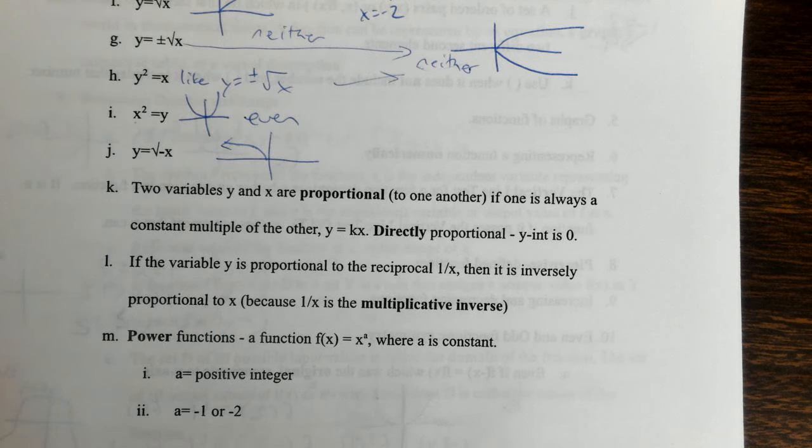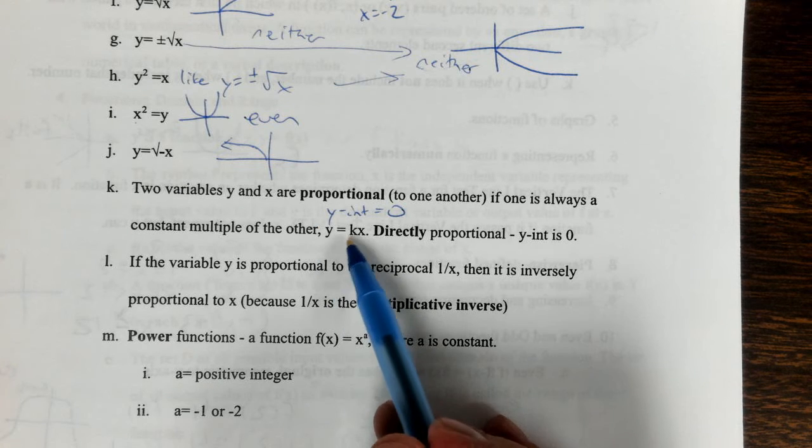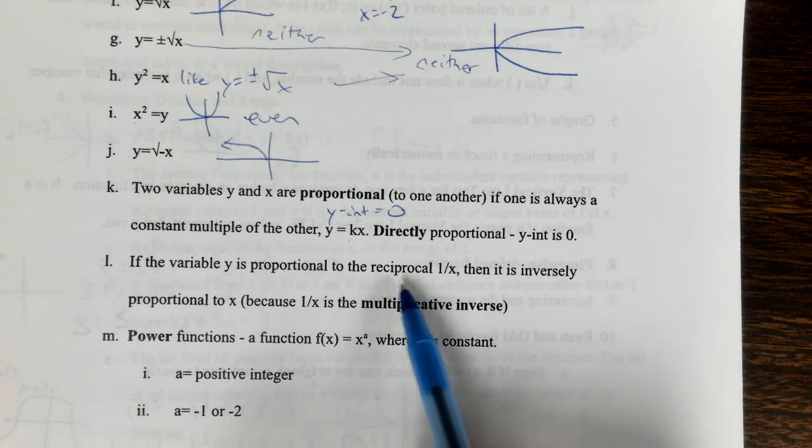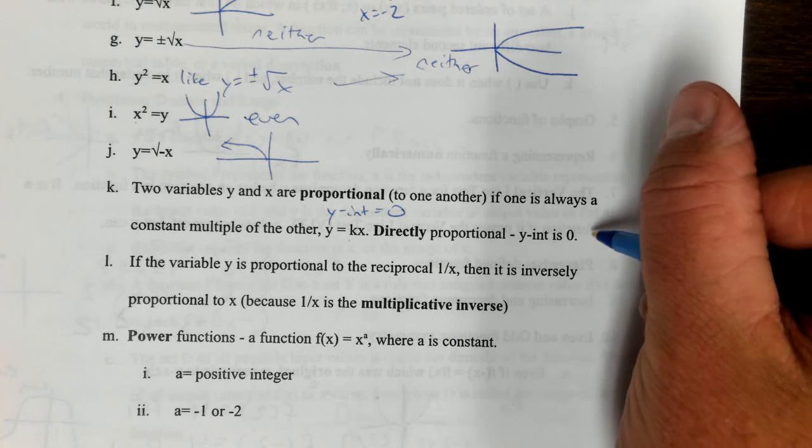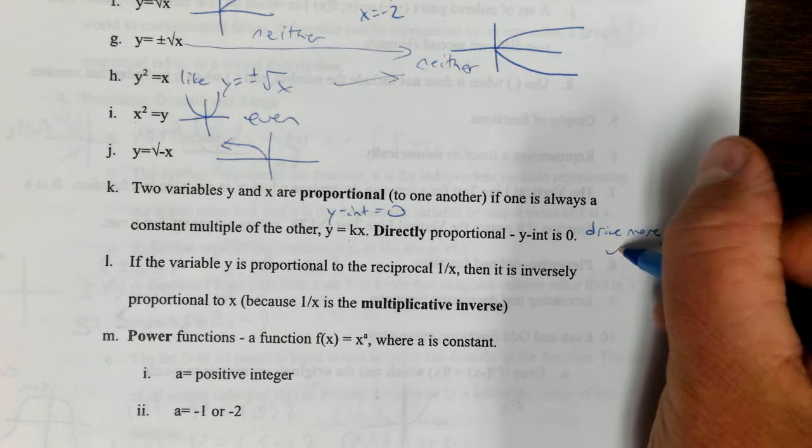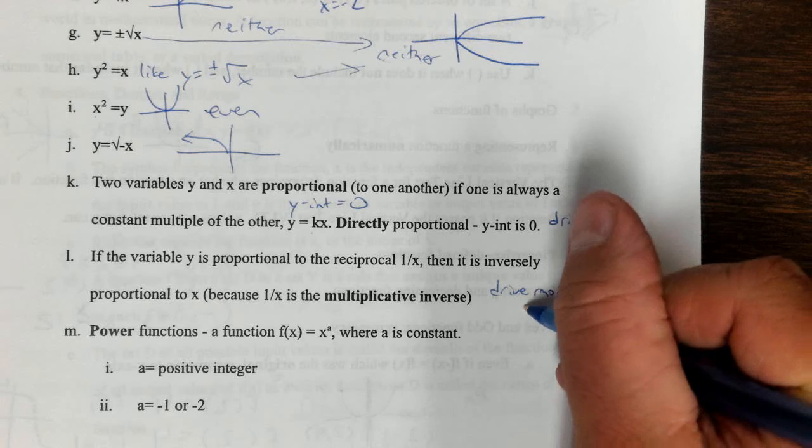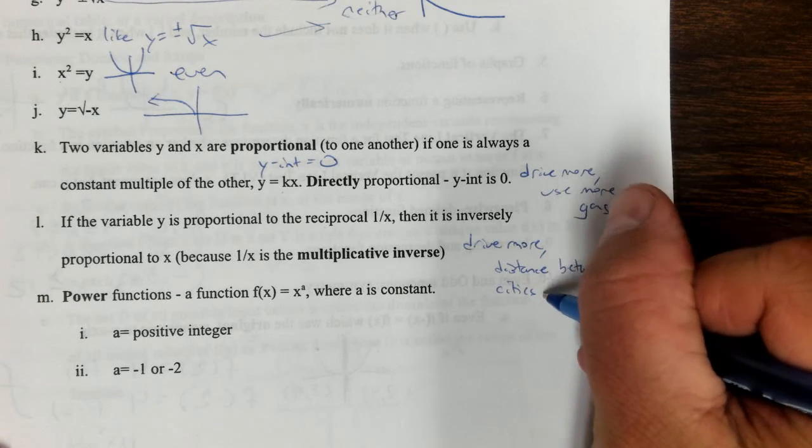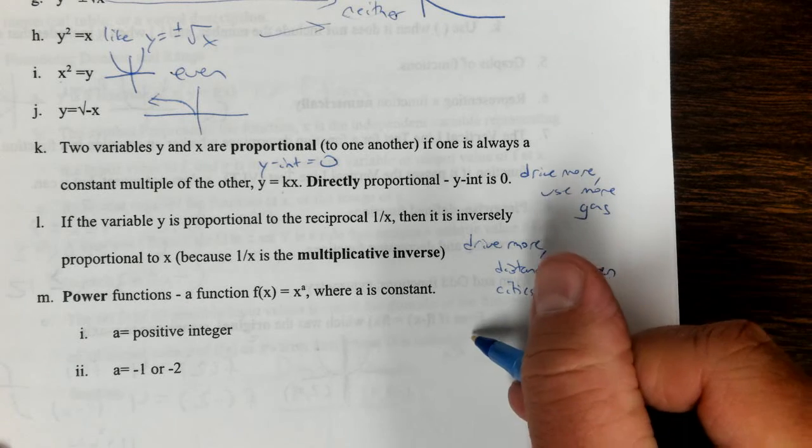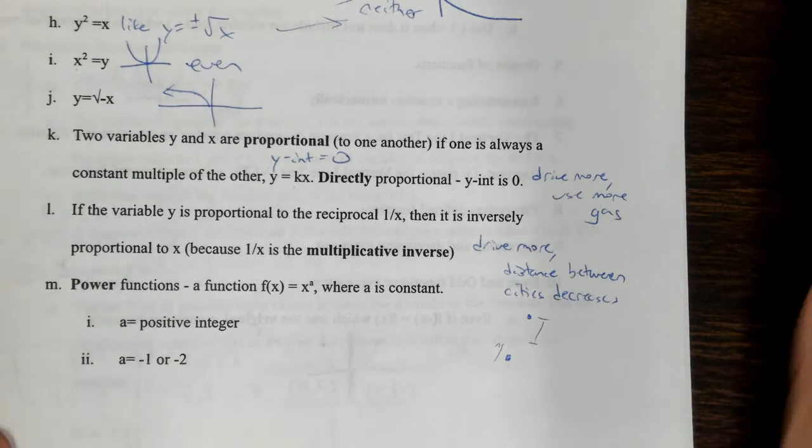Two variables, y and x, are proportional to one another if one's always a constant multiple, and you notice the y-intercept equals zero. So your slope would be the same thing as k, and that'd be directly proportional. But if it's the reciprocal or multiplicative inverse, then it'd be one over x. So directly proportional is drive more, use more gas. And the reciprocal would be drive more, and then your distance between the cities decreases. So, like, say you're in Waco and you're driving to Dallas. As time goes by, you're closer. So that'd be inversely proportional.